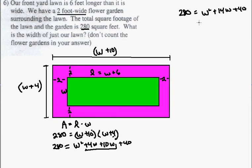And in order to use the quadratic formula, we need to set one side of the equation equal to zero. So let's subtract 280 from both sides of the equation. All right, so with that, this goes to zero.